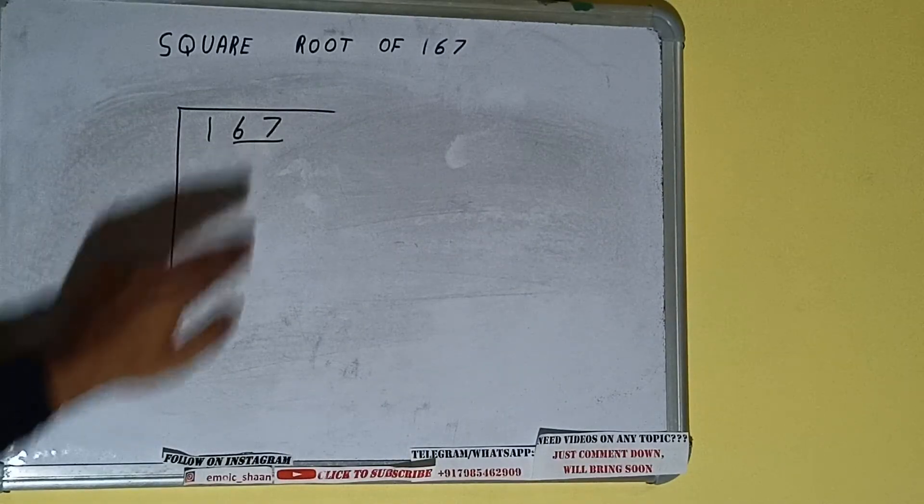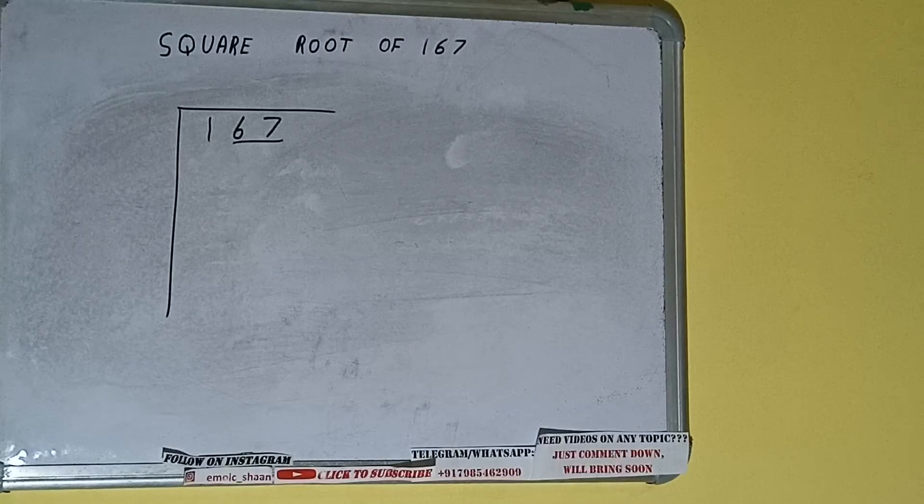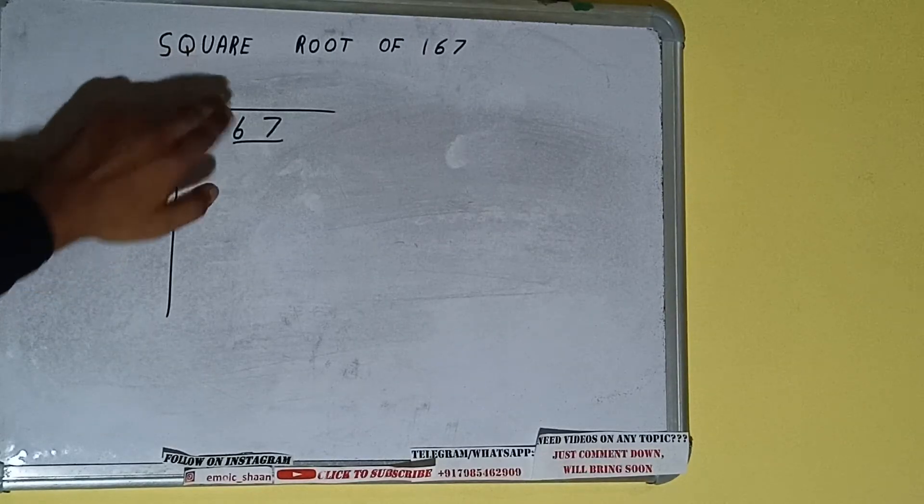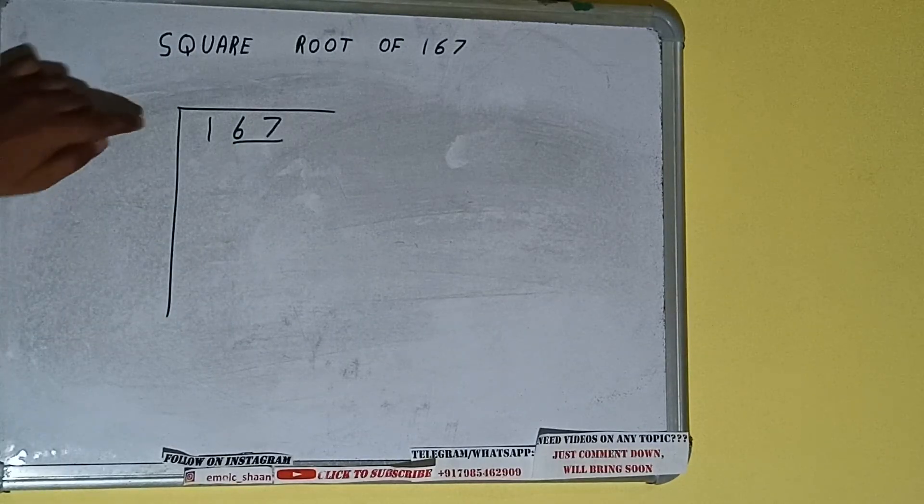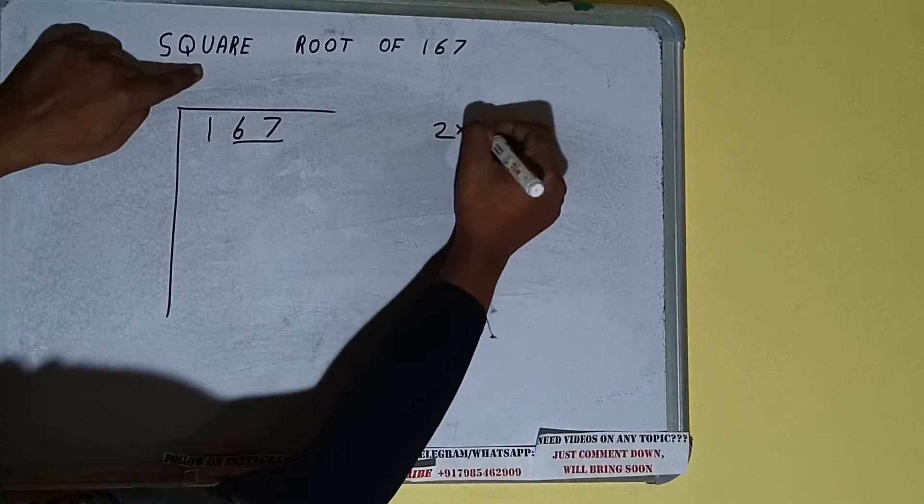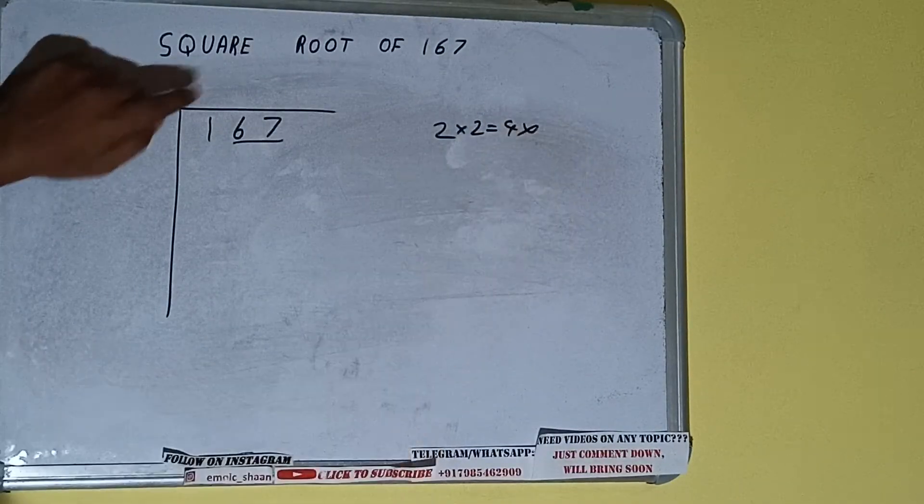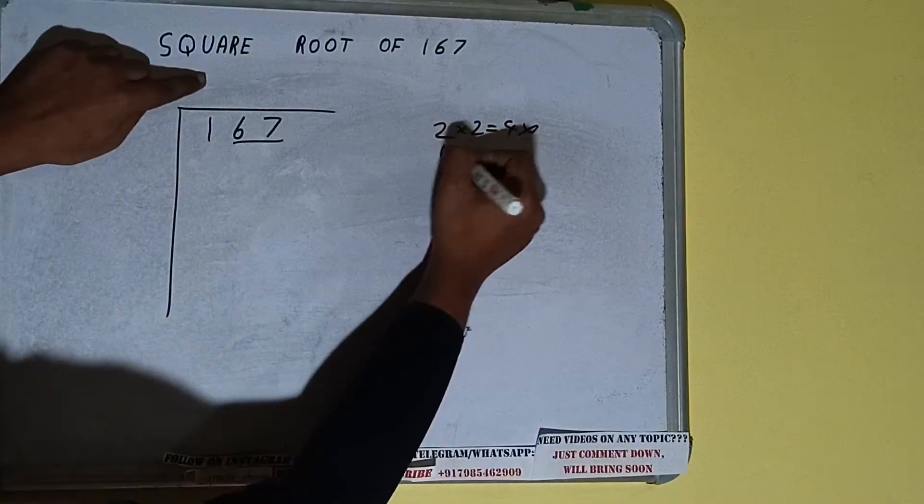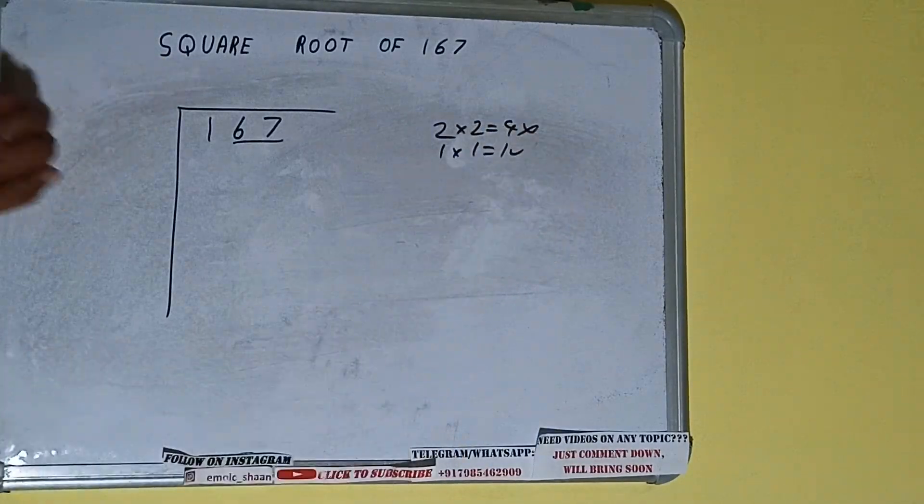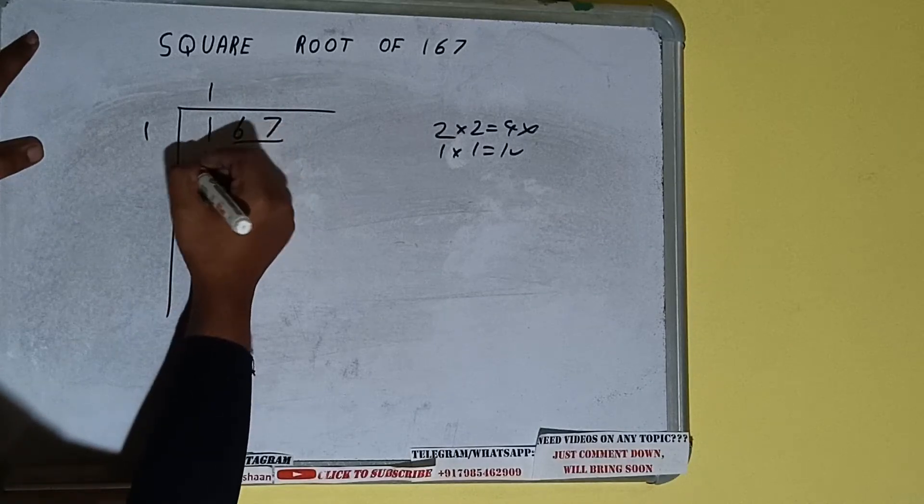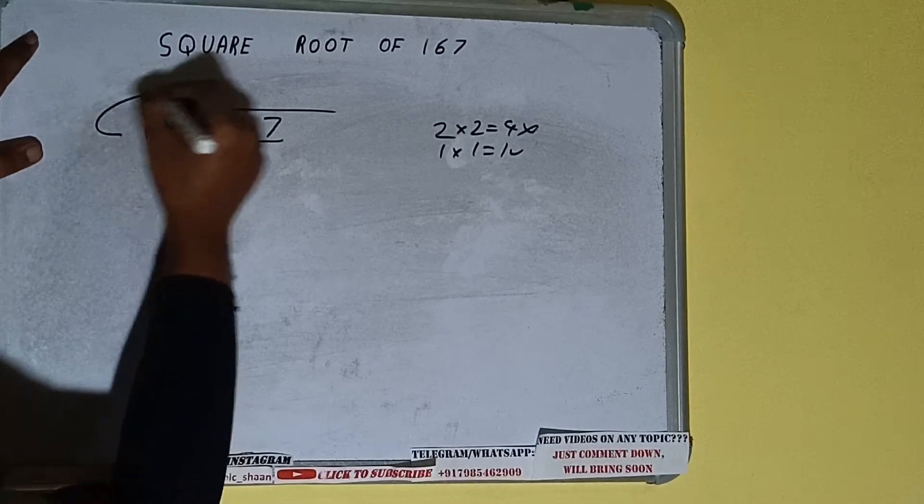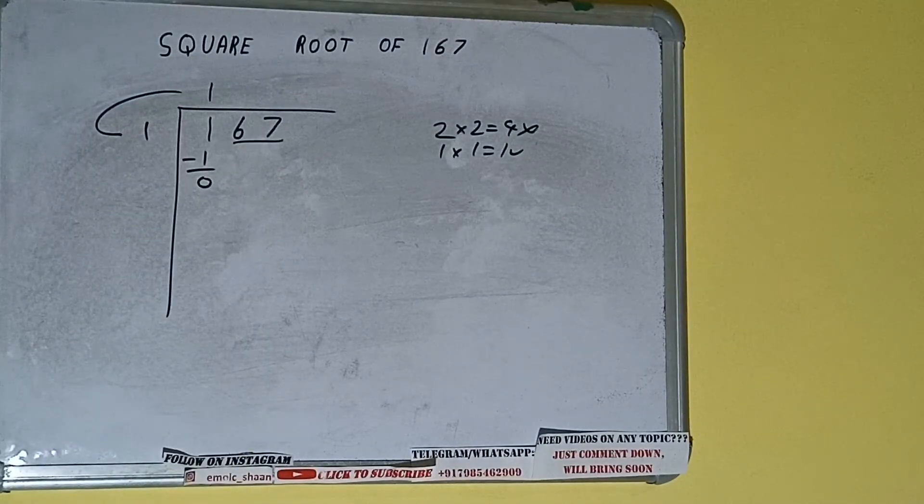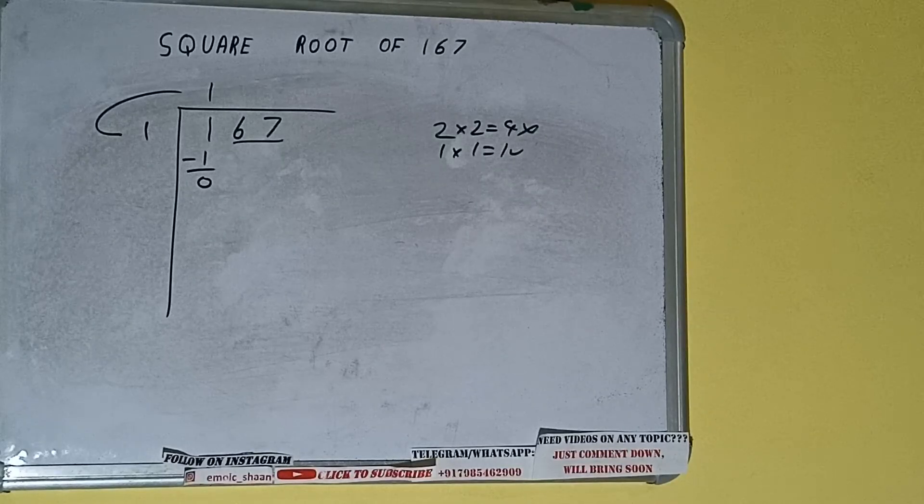So first we'll divide this one and then we'll bring down the pair. The rule is whatever number we write here we have to write here also. So if we write 2 here and 2 here it will be 4 which is greater than 1, so we cannot use it. If we write 1 here and 1 here it will be 1 which is good to use. So 1 here and 1 here, 1 subtract, 0 will be left. We did 1 into 1 so add both. So 1 plus 1 will be 2.